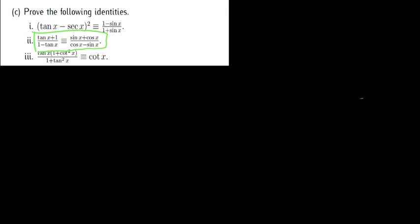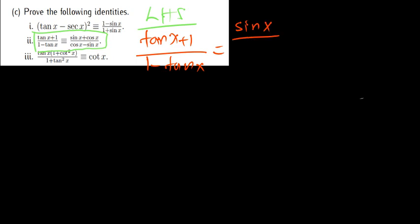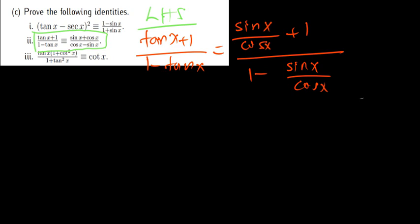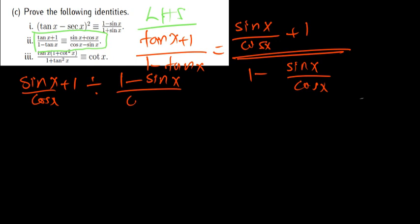I am going to take the left hand side because it contains tan, which I can replace with sin over cos. The left hand side is (tan x + 1) divided by (1 − tan x). Substituting tan x = sin x/cos x gives (sin x/cos x + 1) divided by (1 − sin x/cos x).